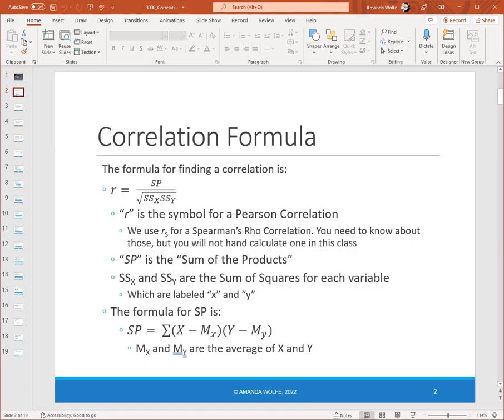So let's start with the formulas. The formula for a correlation is R equals SP over the square root of SSX times SSY. R is the symbol we use for Pearson correlations. As you learned in the previous PowerPoint, there are two kinds of correlations that we will cover in this class. Pearson's correlations are the kinds of correlations you use with ratio and interval data, which in SPSS is called scale. Spearman's rho is R with a subscript S. So R here is for a Pearson correlation. You will not have to hand calculate a Spearman's rho in this class.